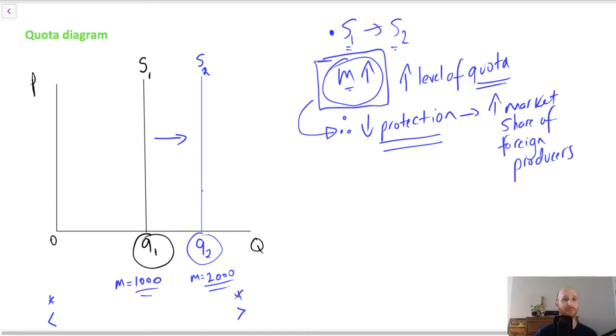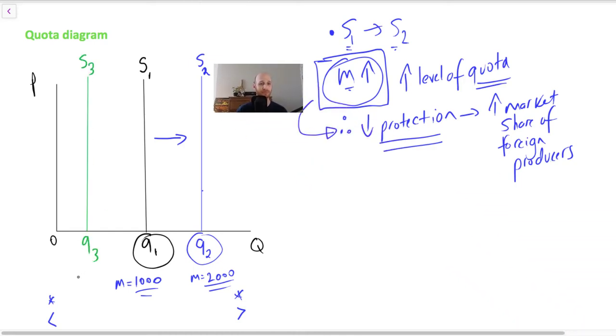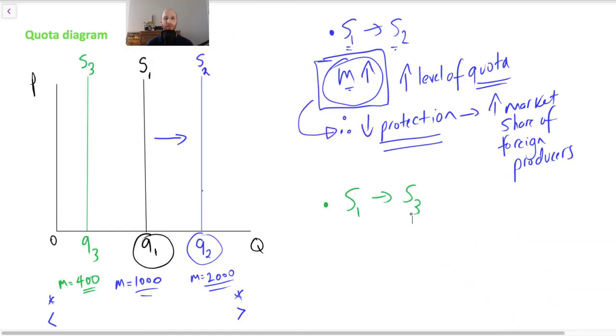Now let's flip it. Let's say we go from S1 to S3. So now we go this way. And so we then go from Q1 to Q3. And we're moving closer to zero. You can see here we're going this way, closer to zero. So therefore the level of imports is falling.